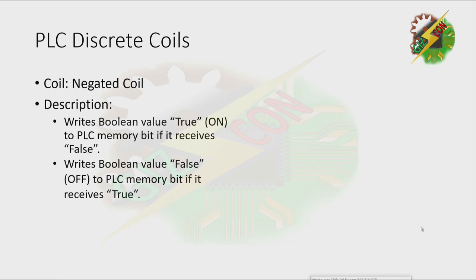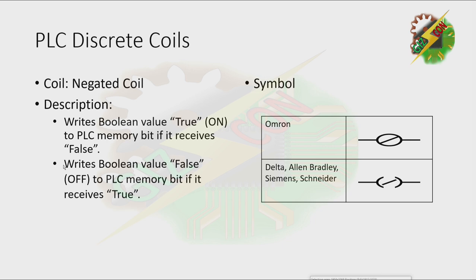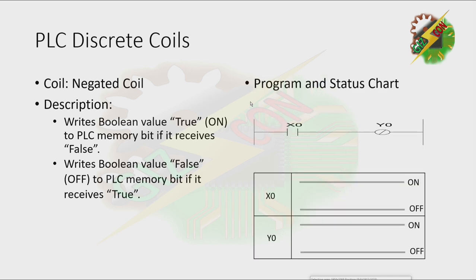Negated coil: it writes a boolean value true or on to the PLC memory bit if it receives false, and writes boolean value false or off to the PLC memory bit if it receives true. This is the symbol depending on the brand — it's just like the counterpart of the normally close contact. Let's have our example: Y0 is initially on because it is negated, and X0 is off. When we turn on X0, Y0 will turn off. When we turn off X0, Y0 will turn on.